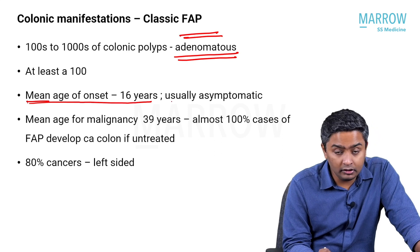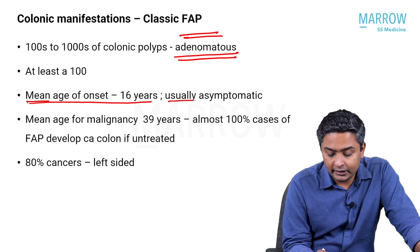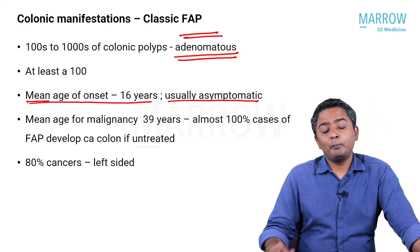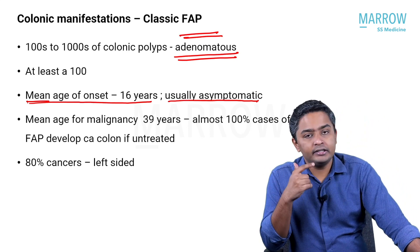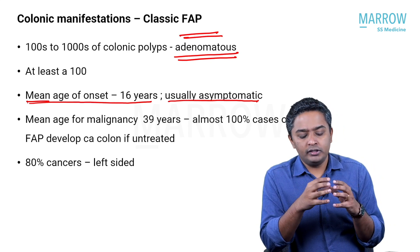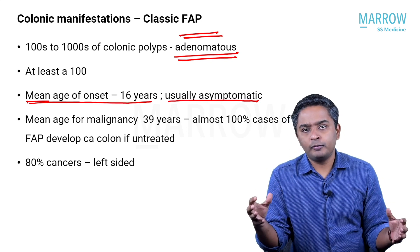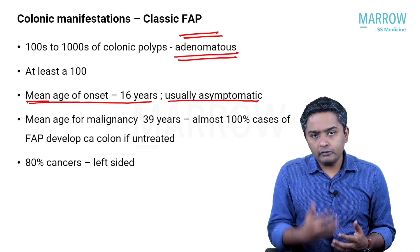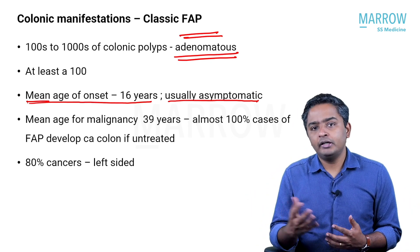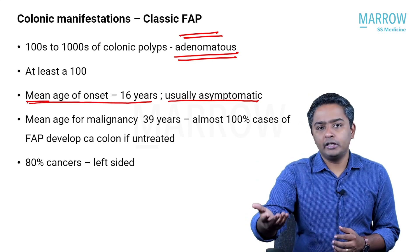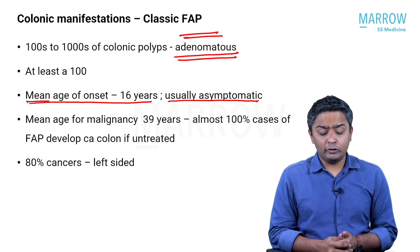At early stages of development of the polyp, patients are usually asymptomatic, but the mean age for malignancy is 39 years. There will be hundreds to thousands of polyps, but not all will turn malignant. One of these polyps will turn malignant, and then you pick up the malignancy and proceed with treatment, genetic testing, and all of that.